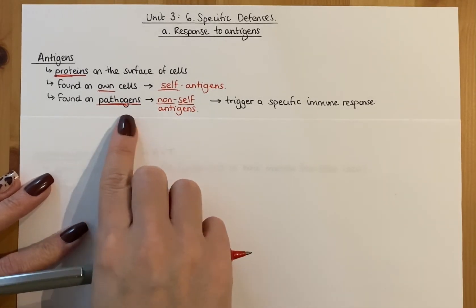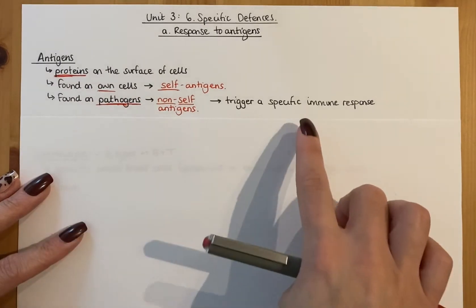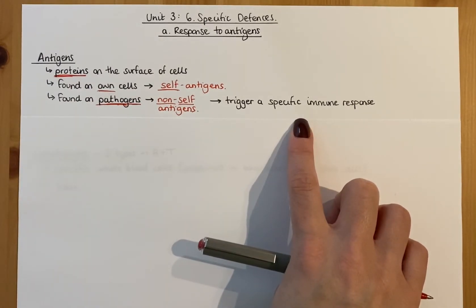Now if your body detects foreign pathogens and the antigens on those foreign pathogens, what it'll do is it'll trigger a specific immune response. And this is where a different type of white blood cell comes in.